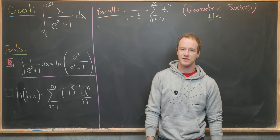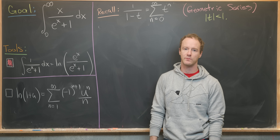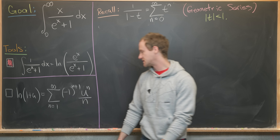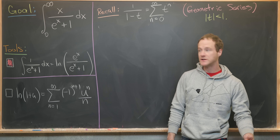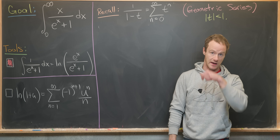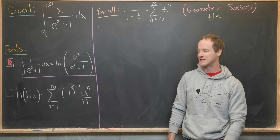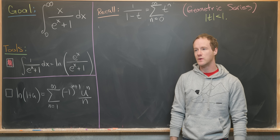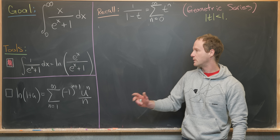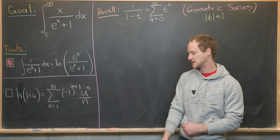Now we're going to look at our second tool, which is a series expansion of the natural log of one plus u. It expands as the sum from n equals one to infinity of minus one to the n plus one times u to the n over n. This holds when the absolute value of u is less than one, which will be satisfied when we make our substitution in the final solution.